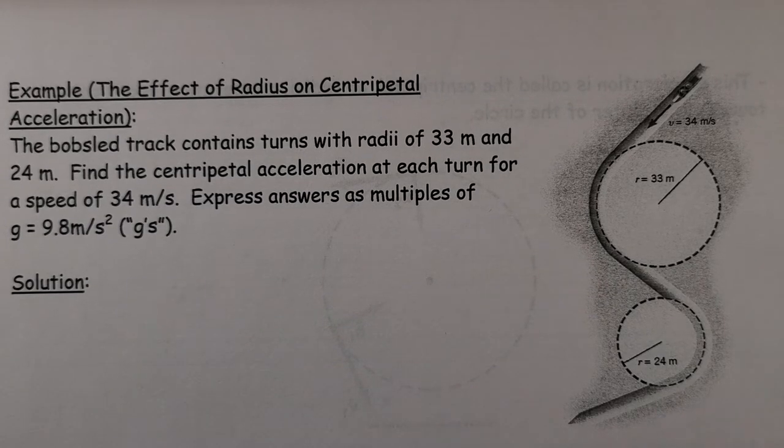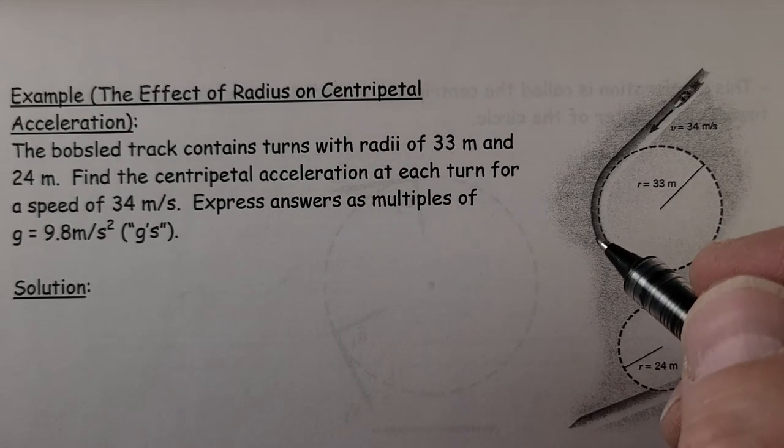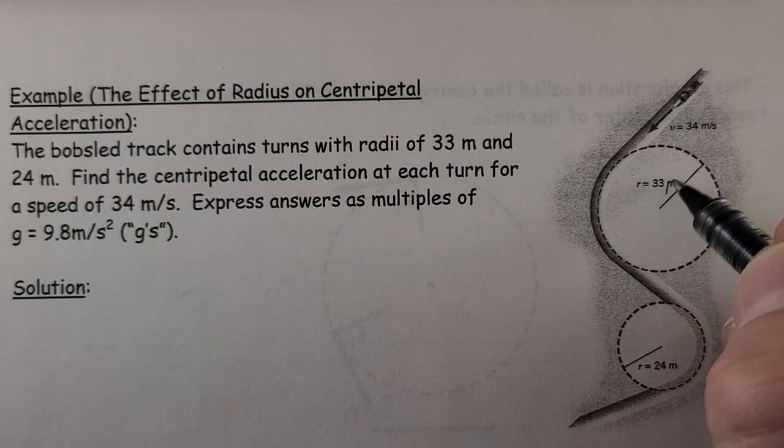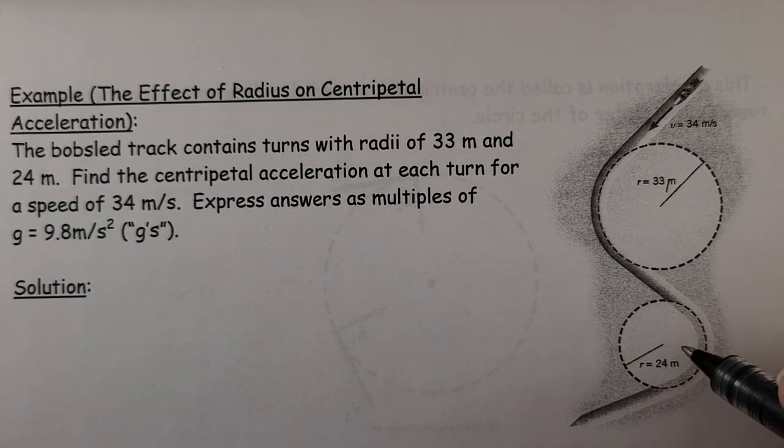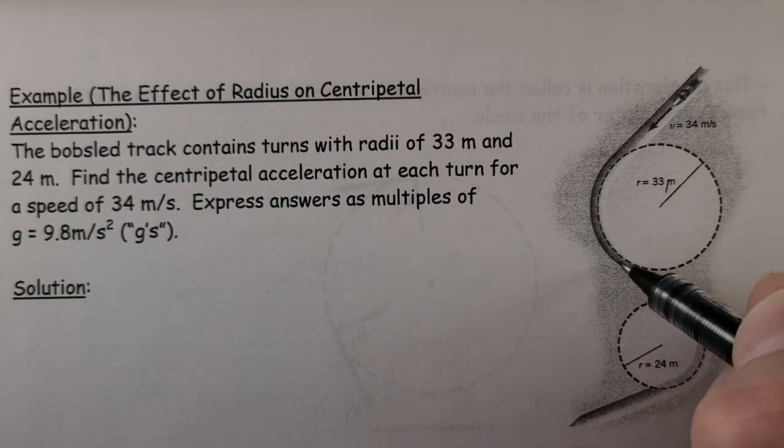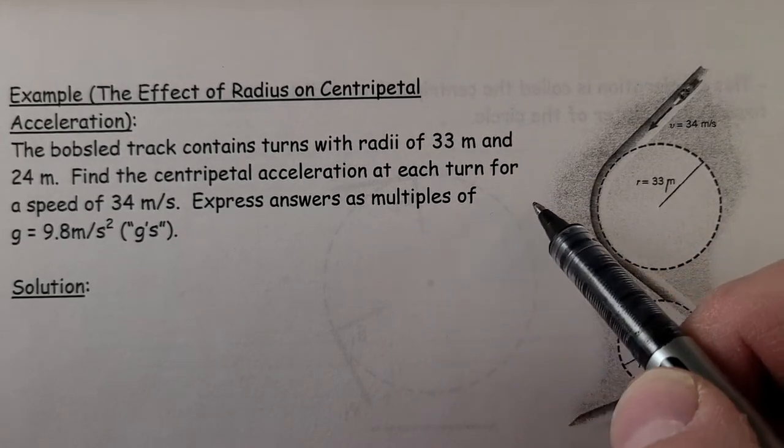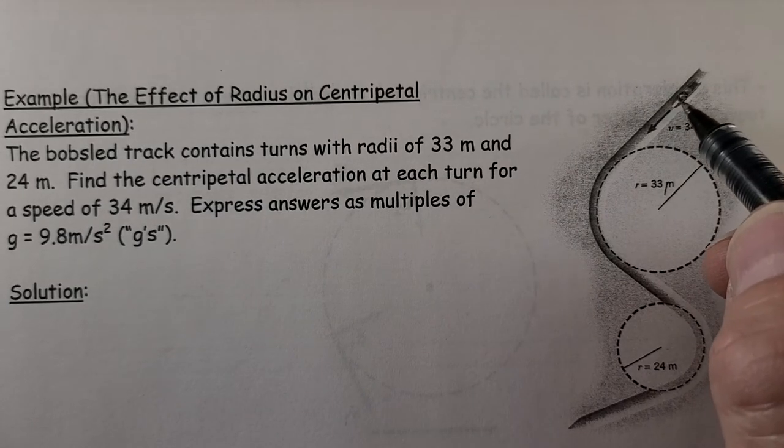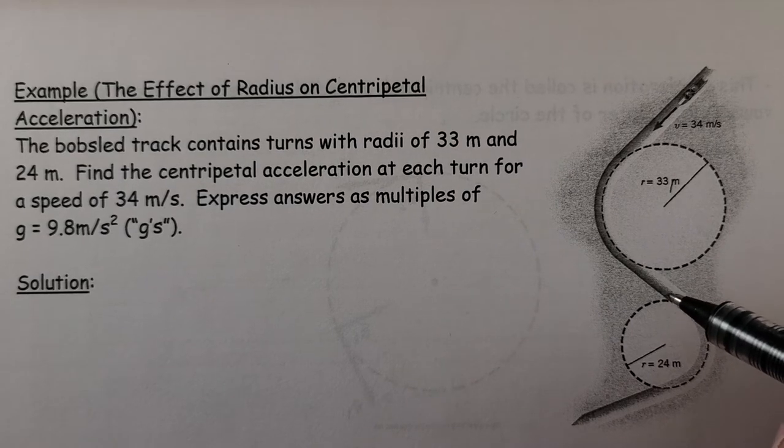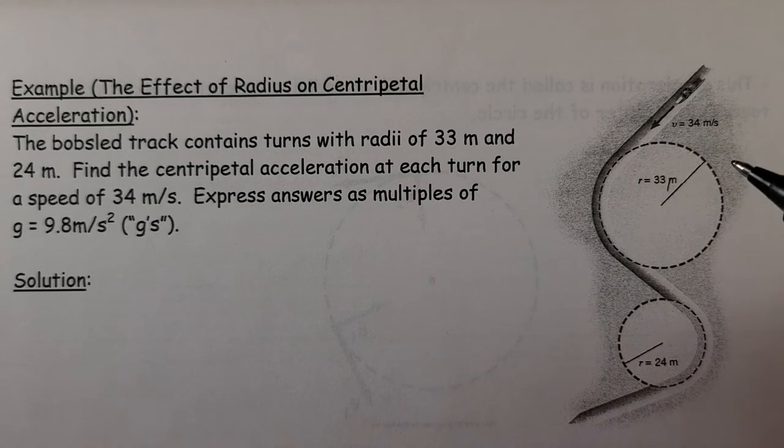With that said, we'll look at this last example, a bobsled going around circular paths. The bobsled track contains turns with a radius of 33 meters here and 24 meters over here around this curve. Notice we complete the circle so we can figure out what is that radius. Find the centripetal acceleration at each turn for a speed. We're assuming this bobsled is going at a constant speed of 34 meters per second, which is around 120 kilometers per hour. Multiply that by 3.6 and you would get your kilometers per hour answer.